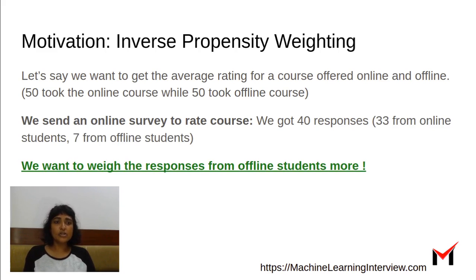So you might get more responses from the people who took the course online. So let's say we got 33 online responses from online students for the course and 7 responses from the offline students. So this confirms the fact that there might be self-selection bias. And now what can we do to get a realistic estimate of the average rating for this course?